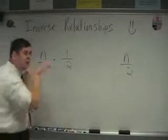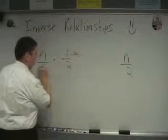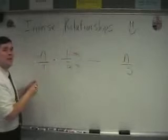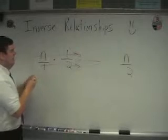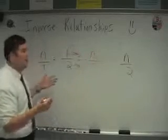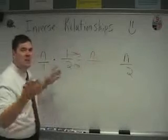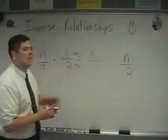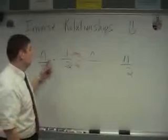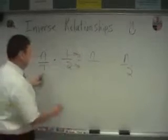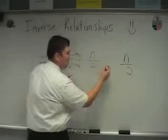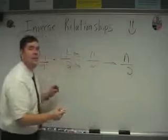When we multiply, we want to multiply straight across — numerator times numerator, denominator times denominator. Here, n times one: some number n times one is n. Any number times one is that number itself. Three times one is three, four times one is four, eight times one is eight. So here we just get the number itself. Then one times two is two.